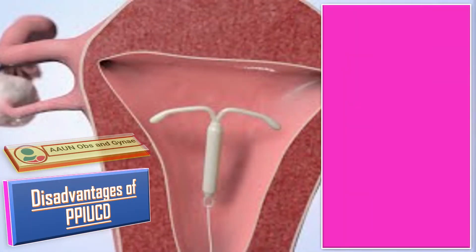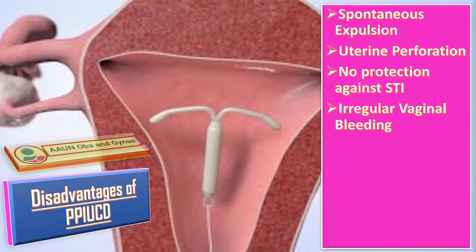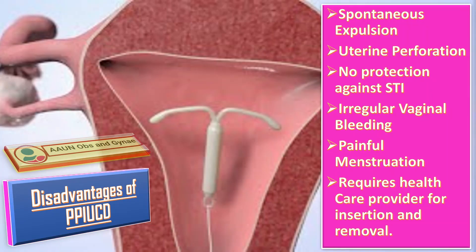Disadvantages of PP-IUCD include the risk of spontaneous expulsion, uterine perforation in some patients, and it gives no protection against sexually transmitted infections. It can cause irregular vaginal bleeding and painful menstruation, and it requires a healthcare provider for its insertion and removal. That was all about PP-IUCD.